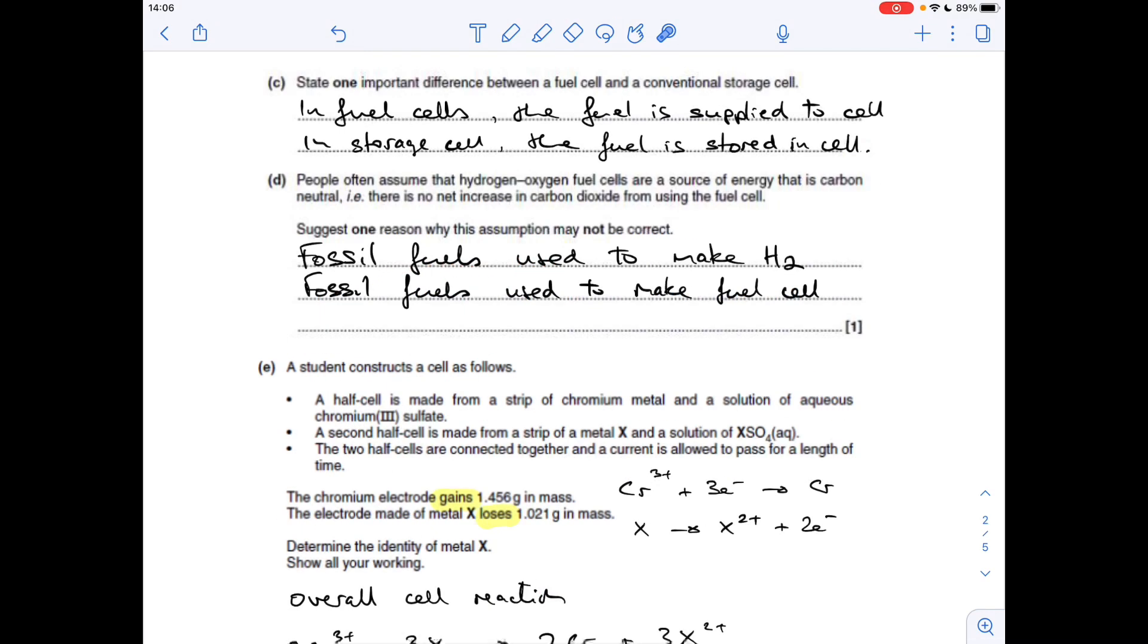Part C now, state one important difference between a fuel cell and a conventional storage cell. So a fuel cell is a type of cell where the fuel is constantly supplied to the cell. Hydrogen, for example, is constantly fed into the cell. In a storage cell, the fuel is actually stored within the cell itself.